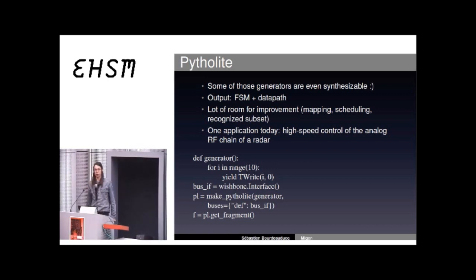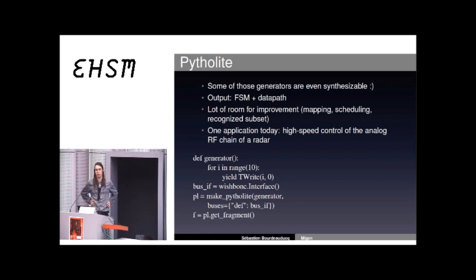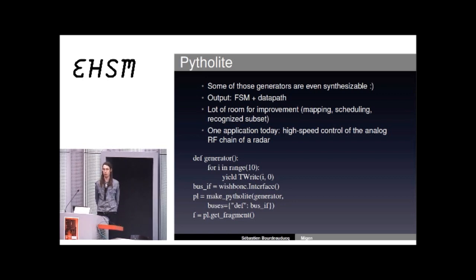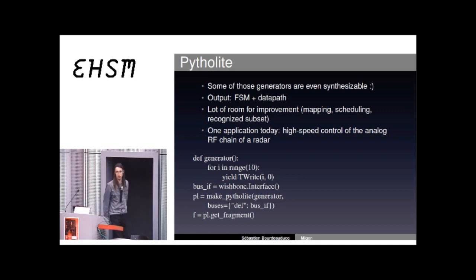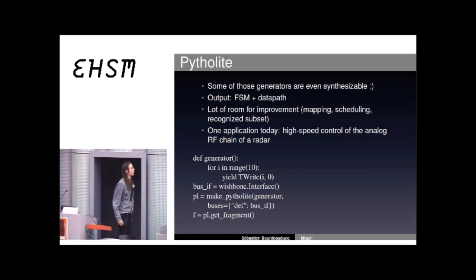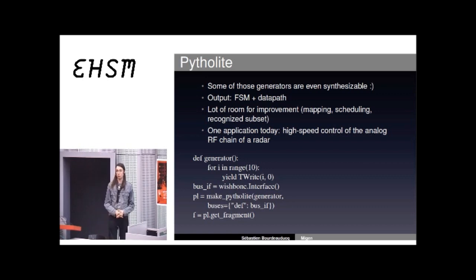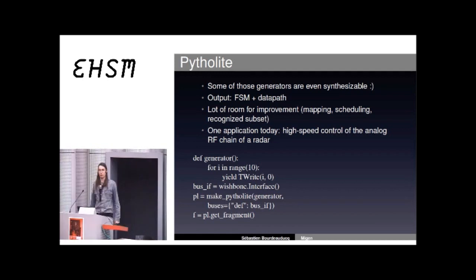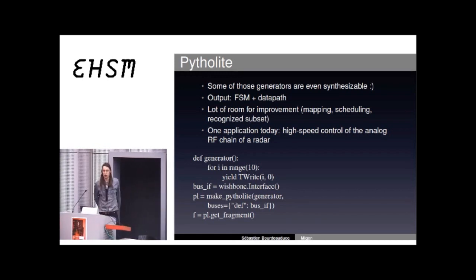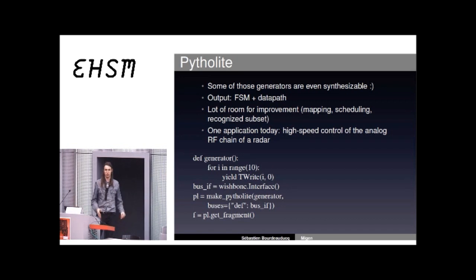There is currently one industrial application of this right now — controlling the analog RF chain of a radar. We have analog components controlled by a serial bus, and we want to control them very fast because we need to change many parameters dynamically in the radio system. A microcontroller is too slow for this. If we do it in Verilog or VHDL we have to deal with a very large state machine, so we write the control code in Python, put it into Pytholyte, and it generates this big state machine which does the radar RF control automatically.